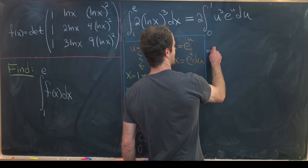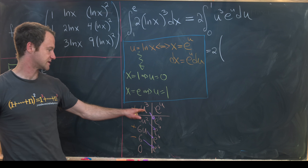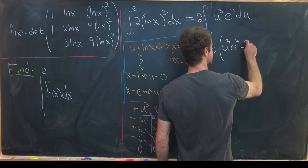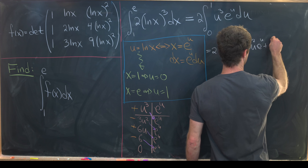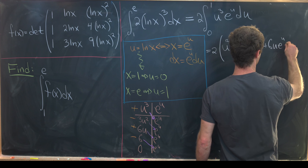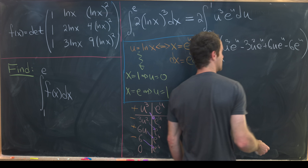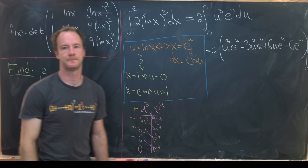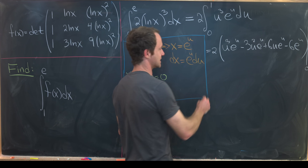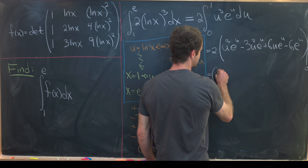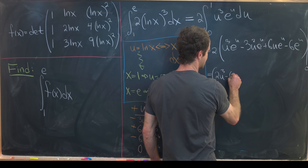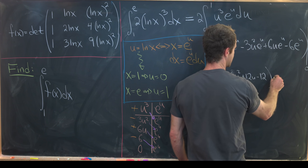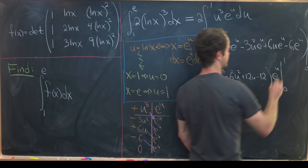This gives 2 times [u³eᵘ − 3u²eᵘ + 6ueᵘ − 6eᵘ], which we can factor as 2(2u³ − 6u² + 12u − 12)eᵘ, evaluated from 0 to 1.